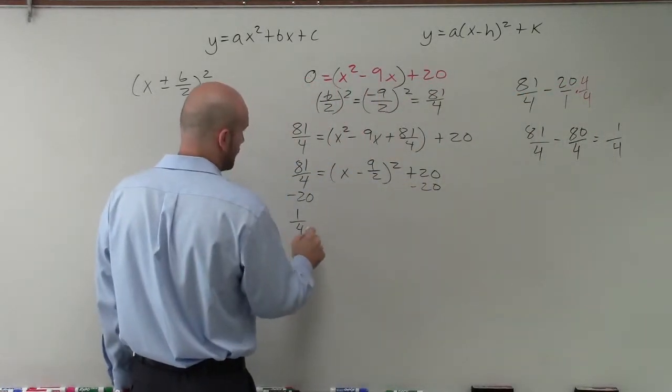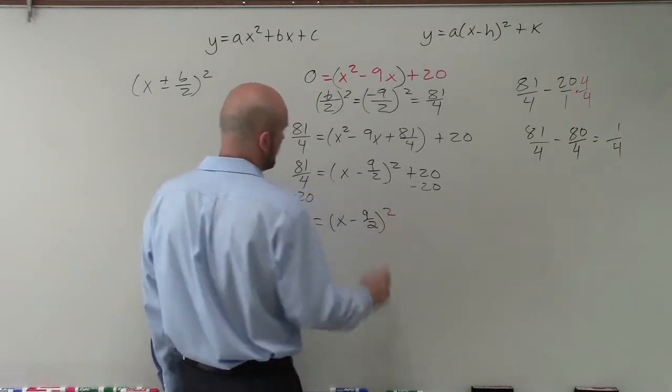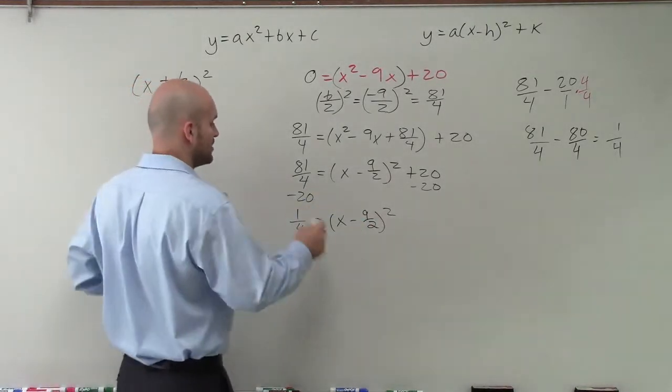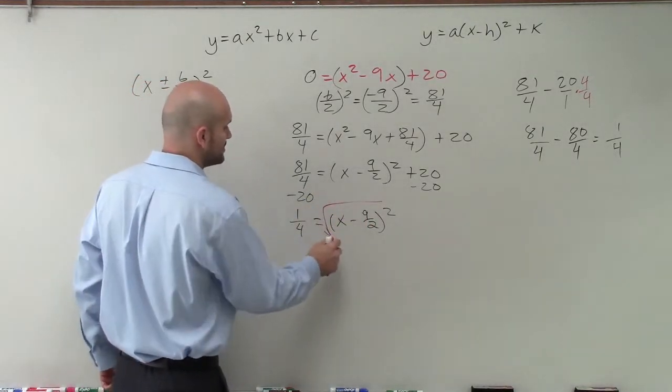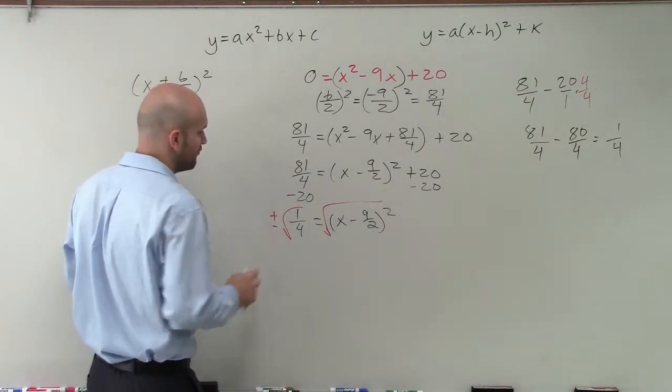So therefore, I have 1 fourth equals x minus 9 halves squared. Now what I need to do is take the square root. So I need to undo the squaring function. So I'm going to take the square root of both sides. And just remember, when you take the square root of both sides, we need to include the positive and the negative form of version.